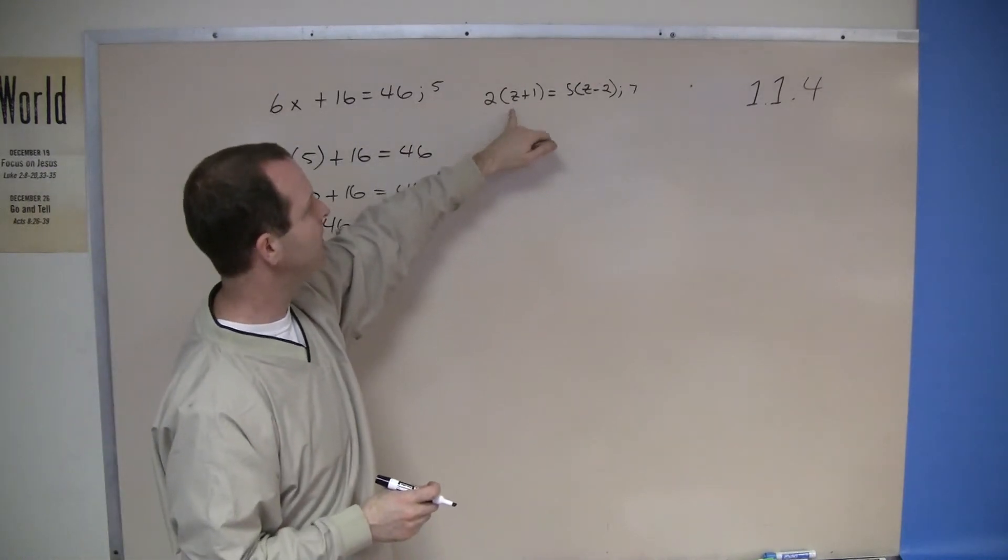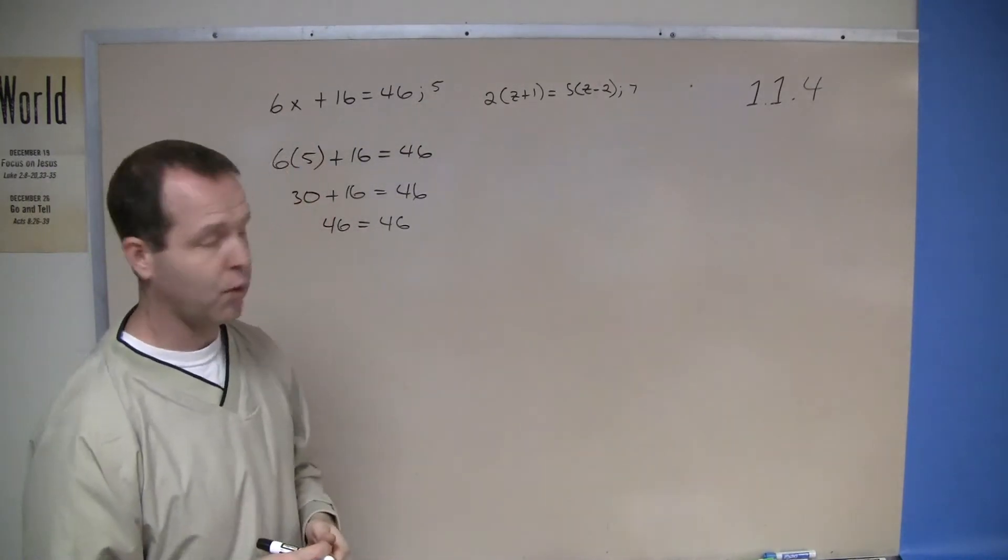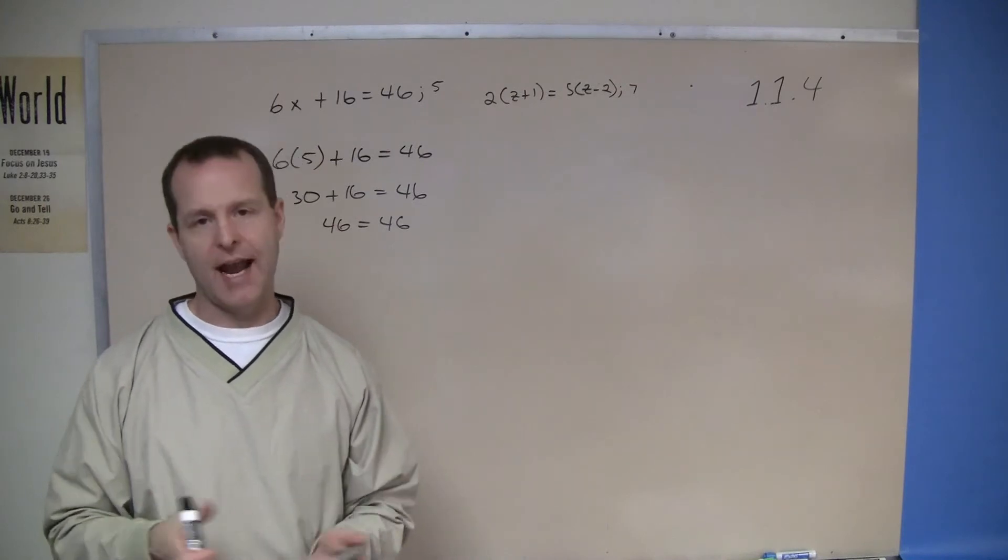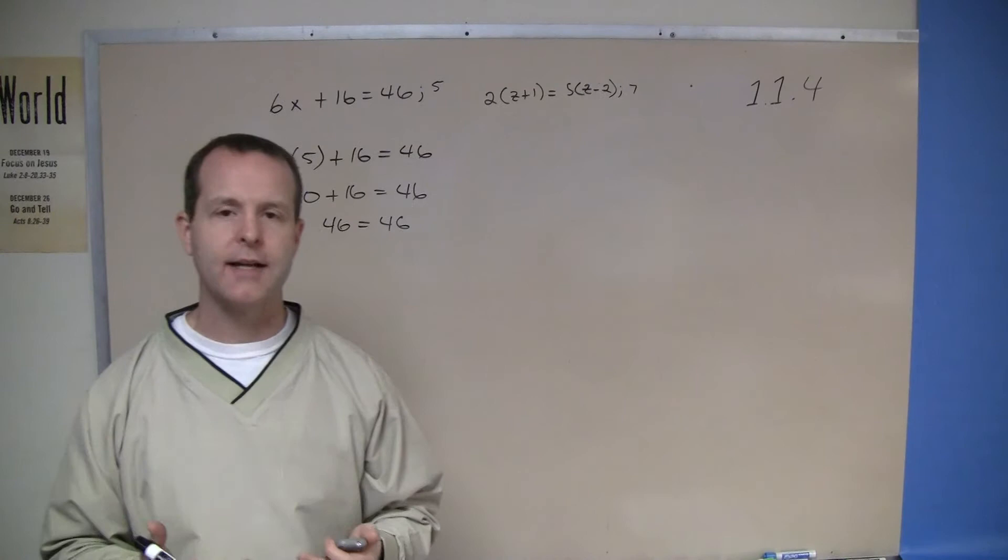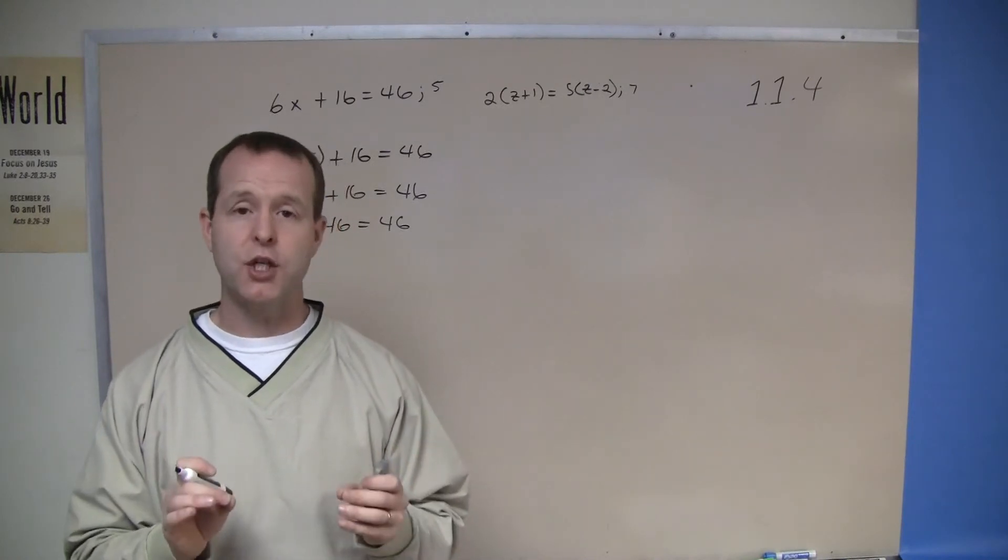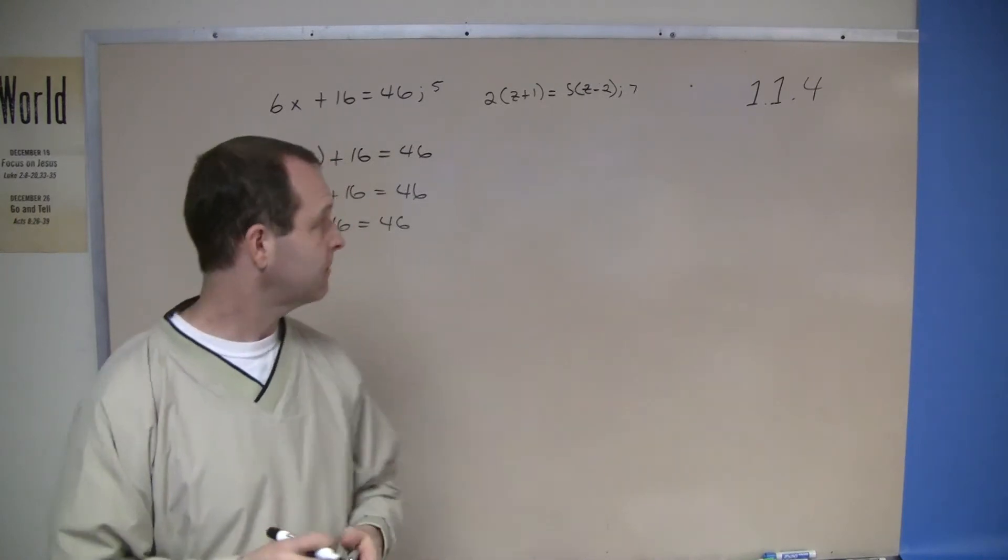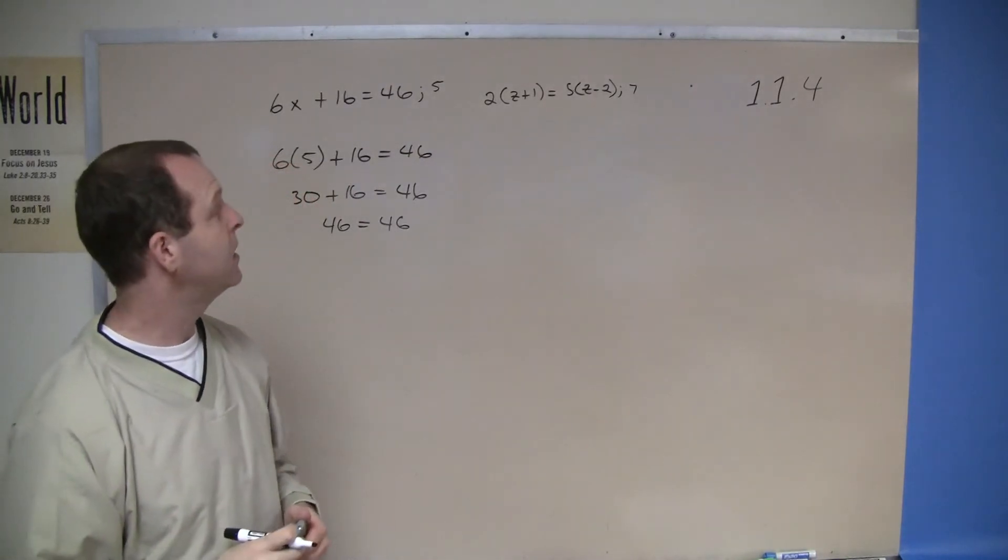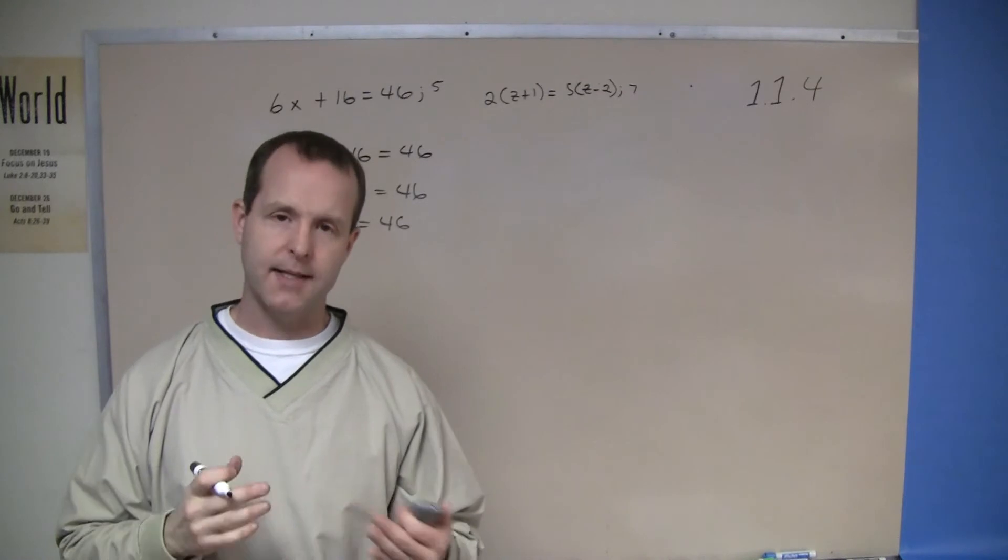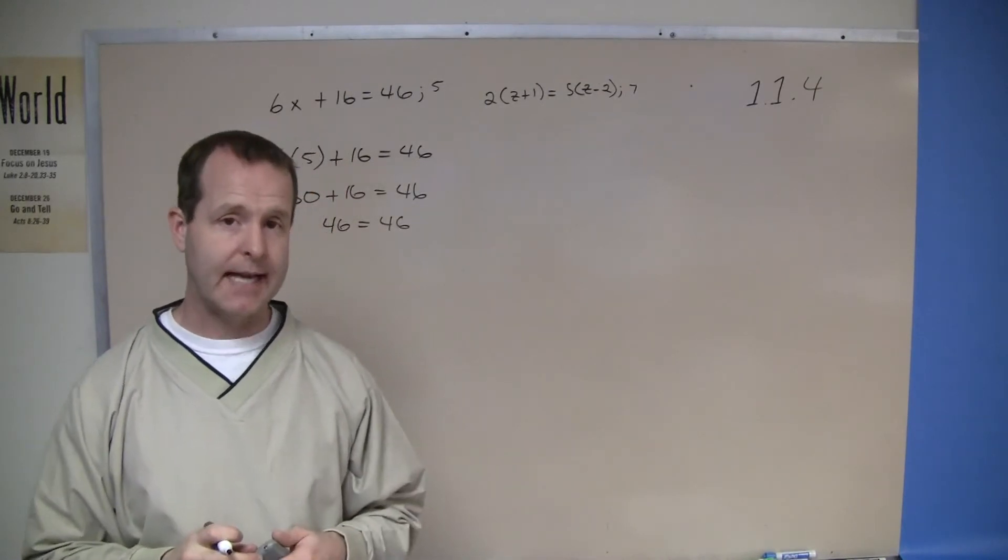In the second example I have another equation. This time I have z as the variable. And again just to kind of help us understand that it doesn't matter what letter we choose as a variable. So I have 2 times z plus 1 equals 5 times z minus 2 and I want to evaluate this equation at z equals 7.